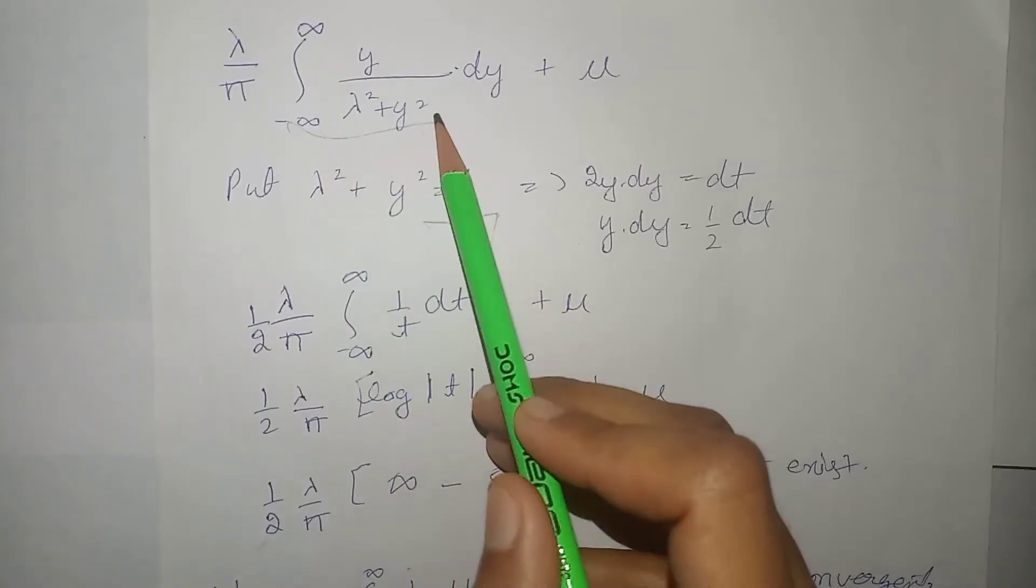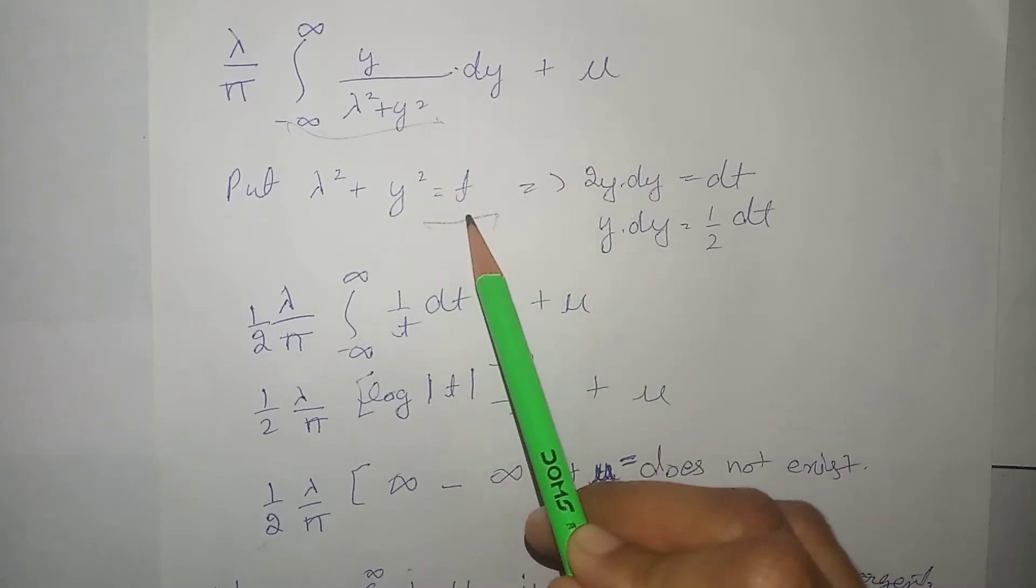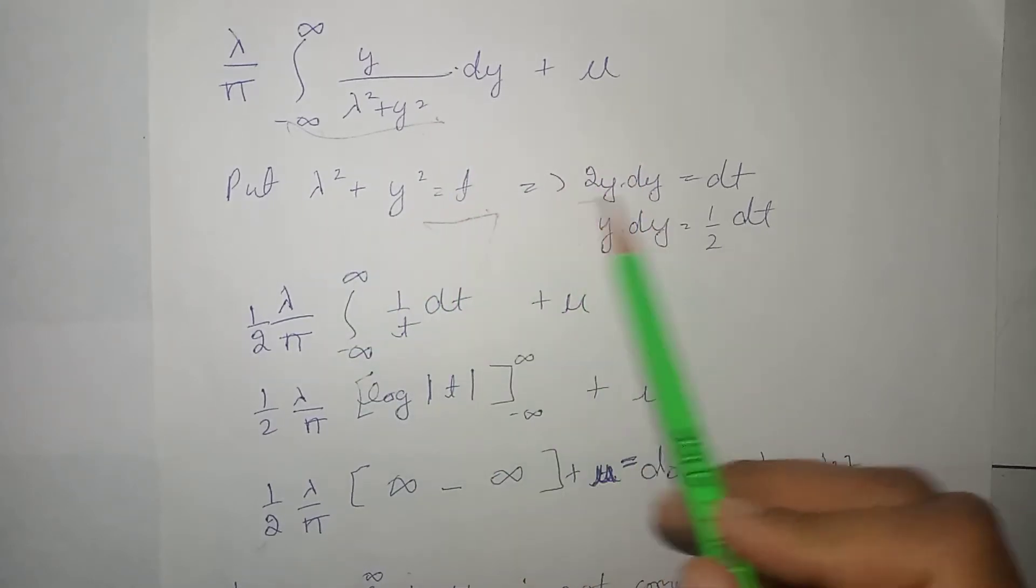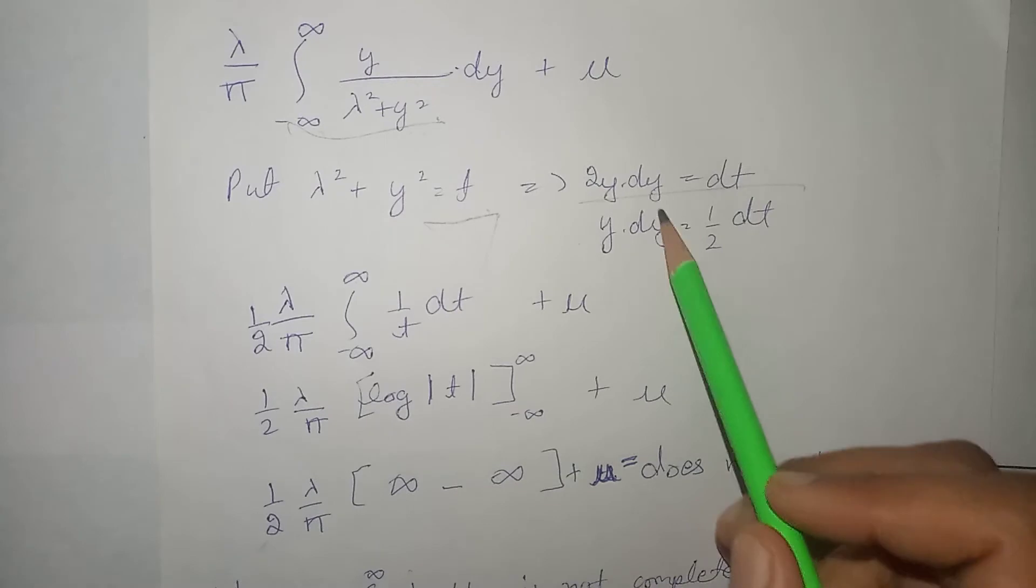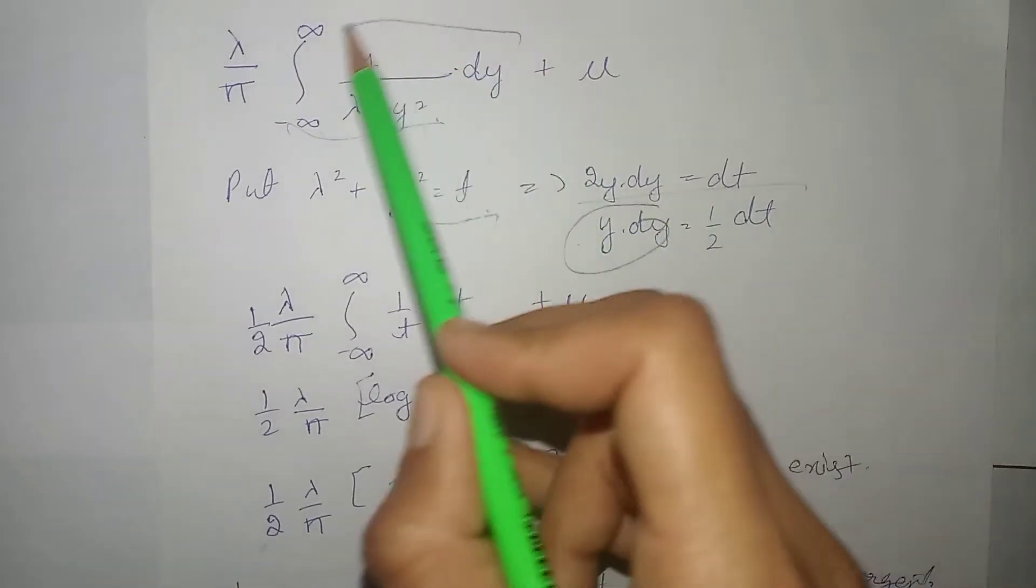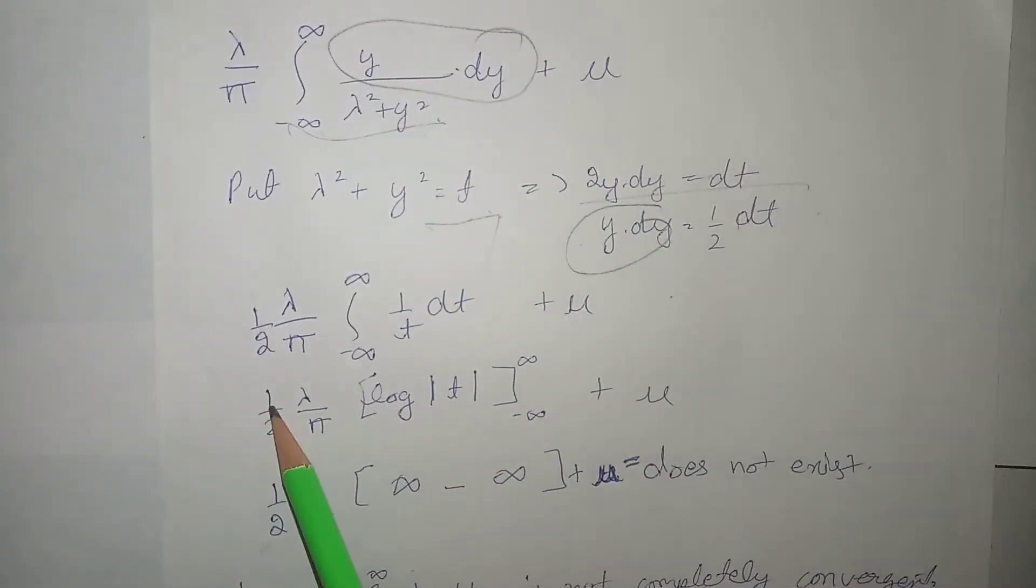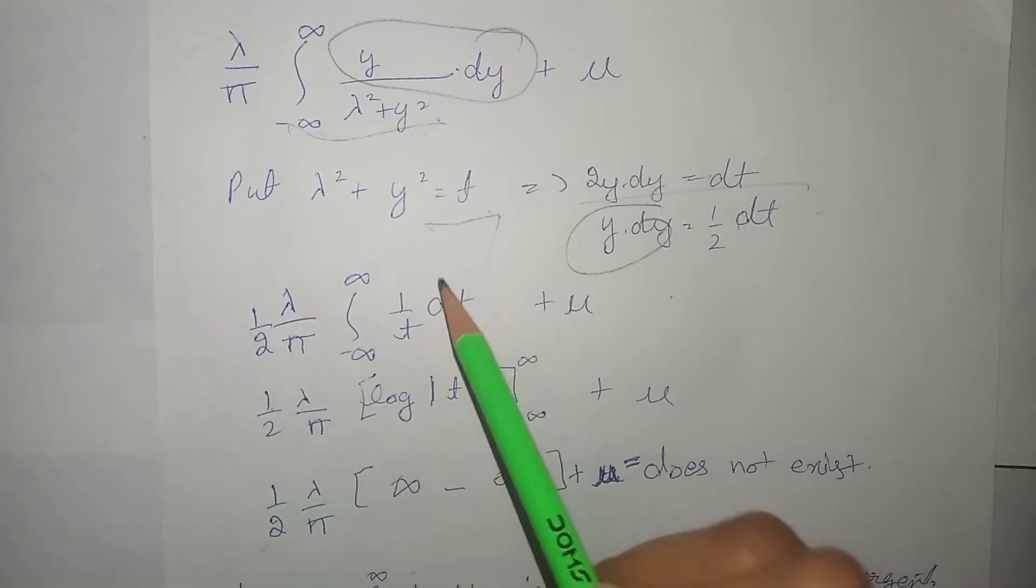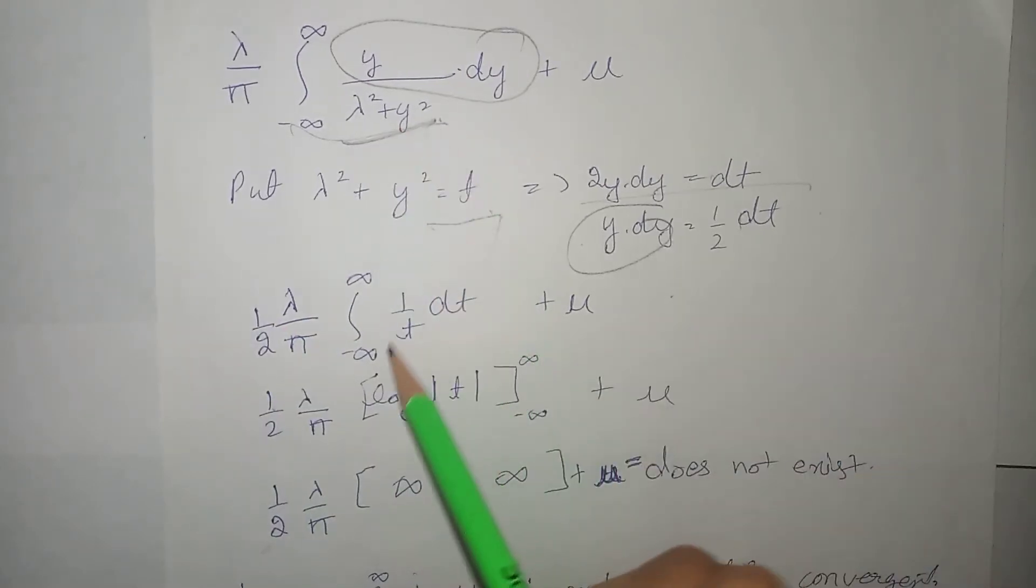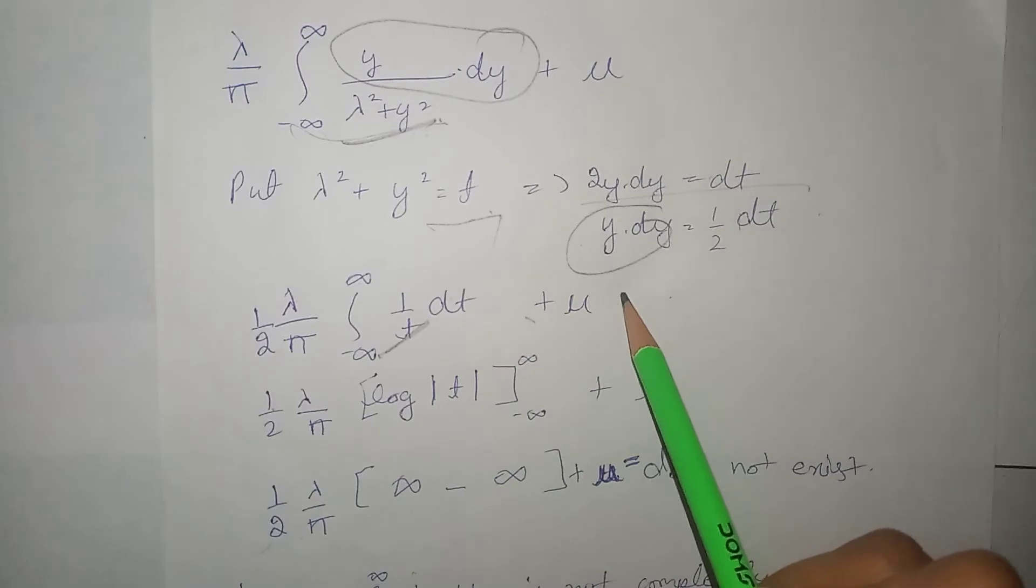Next, joh niche humare paas lambda square plus y square tha, usko bhi hum t put kar denge. Don't say, agar differentiations ki, humare paas hi aagya. Or, yaan se humare paas value nikali, ye y dy ki. Ye y dy ki value humare paas nikali, half dt, half humne bahar rakh diya, because it's a constant term. And dt humne ya hamper rakh diya, iski jaghah per humne t put kar diya. Plus, mu to humne aise hi chal raha tha.